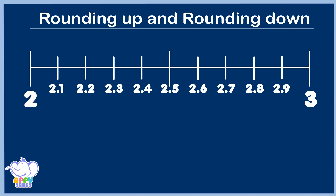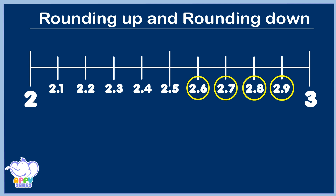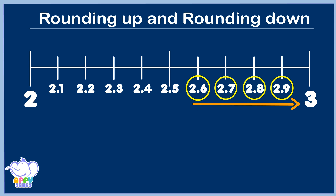With numbers from 0.1 through 0.4, that's what you do. 2.6 through 2.9, round it up to 3.